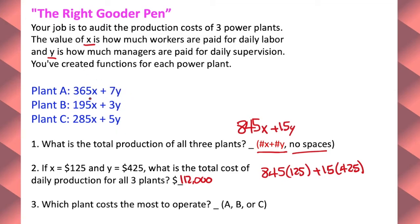So right away, it looks like I'm weeding out plant B because it's got the least workers and the least managers. Obviously the plant that has the least amount of people is probably going to cost you the least amount of money.